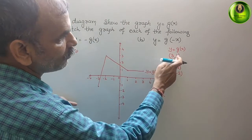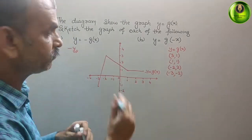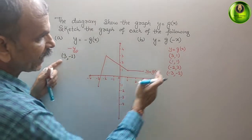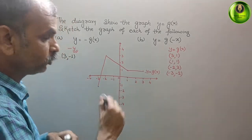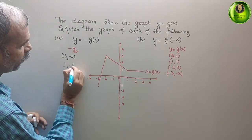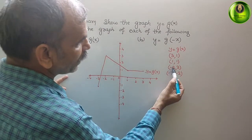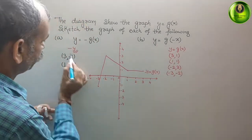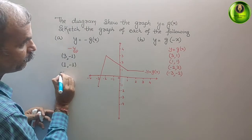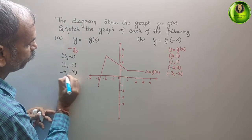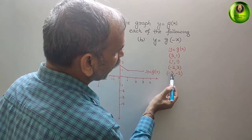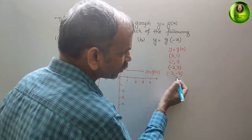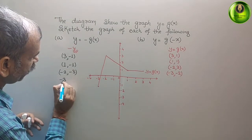Therefore, the new coordinates for y = -g(x) are as follows. The point (3, 1) becomes (3, -1). The point (1, 1) becomes (1, -1). The point (-2, 3) becomes (-2, -3). And the point (-3, -2): minus of minus 2 is plus, so it becomes (-3, 2).